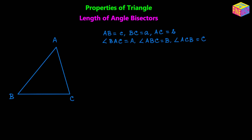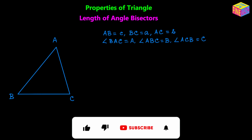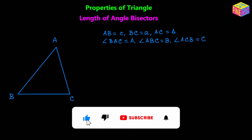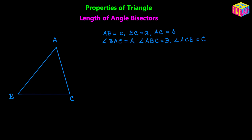Suppose we have a triangle ABC as you can see in the diagram, where the side length AB is denoted by lowercase c units, side length BC is denoted by lowercase a units, and side length AC is denoted by lowercase b units. Similarly, angle BAC near vertex A is denoted by uppercase A radians, angle ABC is denoted by uppercase B radians, and angle ACB is denoted by uppercase C radians.